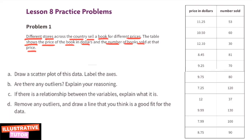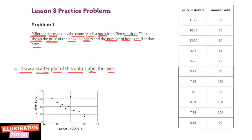Problem number one: different stores across the country sell a book for different prices. The table shows the price of the book in dollars and the number of books sold at that price. Part a: draw a scatter plot of this data and label the axes. The horizontal axis is the price in dollars and the vertical axis is the number of books sold.